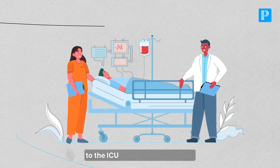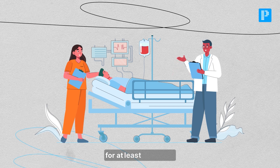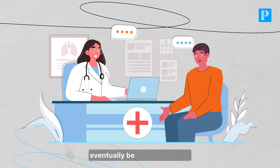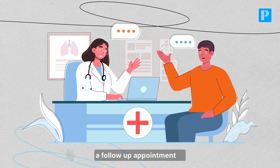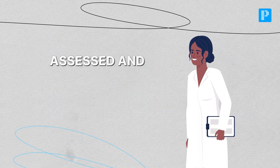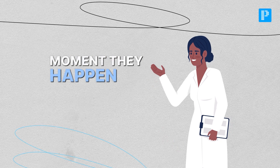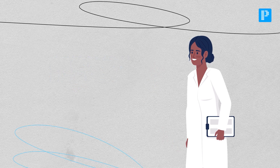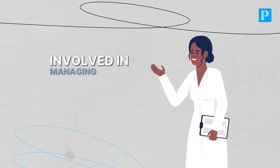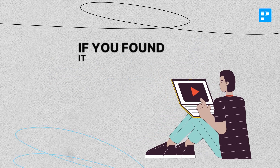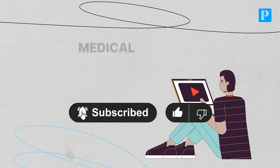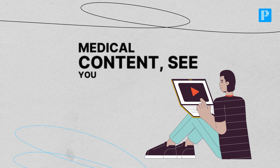For severe head injuries, patients will need to be admitted to the ICU and monitored closely for at least 24 hours. If they are stable, they can eventually be discharged with a follow-up appointment to track recovery. That covers how head injuries are assessed and treated, from the moment they happen through ICU care and beyond. If you found this useful, make sure to like and subscribe for more detailed medical content.